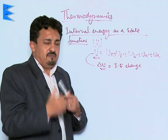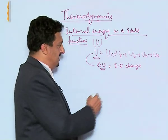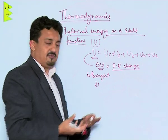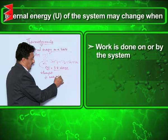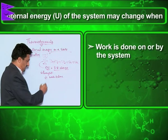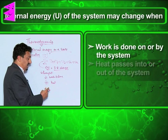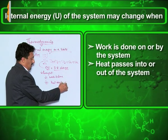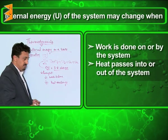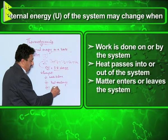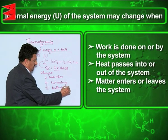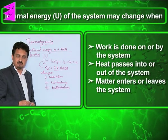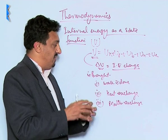The question is: how do we bring about a change in internal energy? There are mainly three ways. First, by doing work — work done can bring about a change in internal energy. Second, when heat is given or taken out — heat exchange can change the internal energy. Third, when matter exchange takes place — exchange of matter also results in a change in internal energy. These are the three possible ways by which internal energy changes.